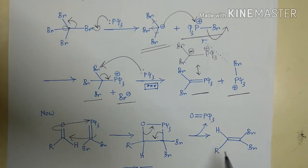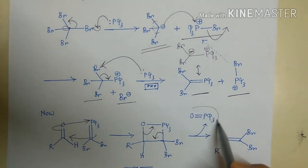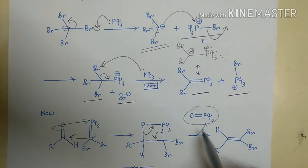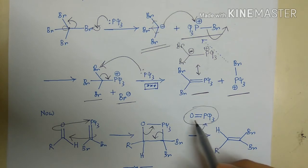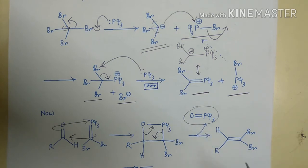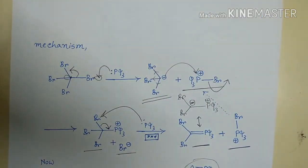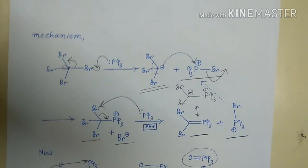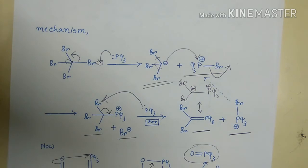The driving force for this reaction is the formation of the very strong P=O bond in triphenylphosphine oxide. So now we have the 1,1-dibromoalkene in hand, and the next step is treatment with butyl lithium.